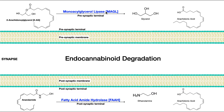Monoacylglycerol lipase is a membrane-bound enzyme. Though it may look like it's in the cytoplasm here, it is membrane-bound — because this is a fatty acid derivative, so it's hydrophobic and not going to be floating free in the cytoplasm. Monoacylglycerol lipase is going to hydrolyze off the arachidonic acid. This ester bond right here is going to be hydrolyzed, releasing arachidonic acid. You also get back glycerol, which can be reused to make phospholipids or triglycerides. And arachidonic acid has functions on its own as well.